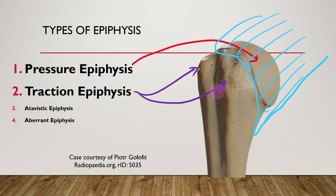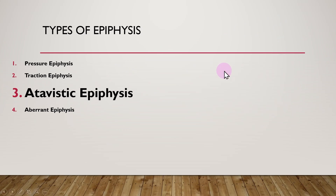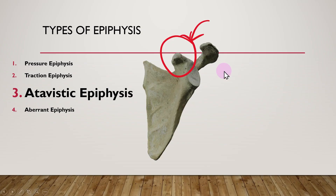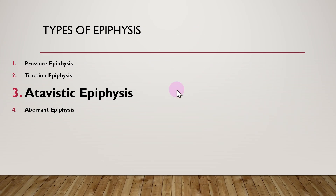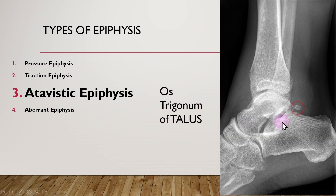The next type is called the atavistic epiphyses. The classic example is the coracoid process. It means that it is a phylogenetically independent bone — in lower animals, such as monotremes, this can be a separate bone, but in humans it has fused with the scapula. Another example is the os trigonum of the talus, which is usually part of the talus but can sometimes be a separate bone and should not be mistaken for a fracture.